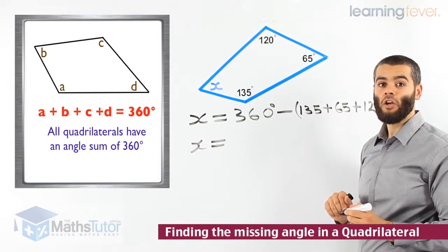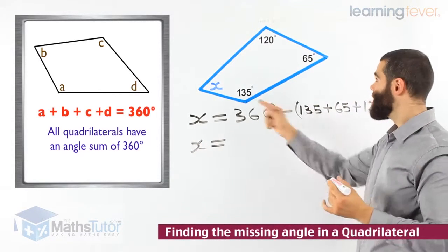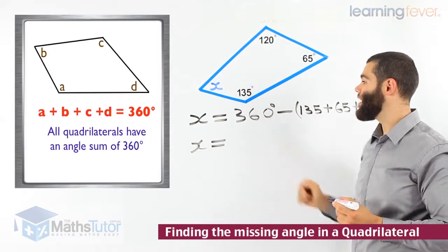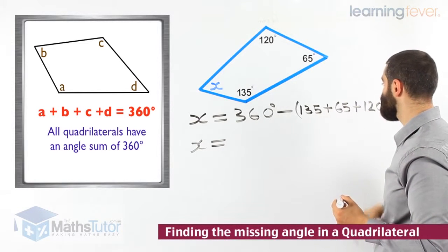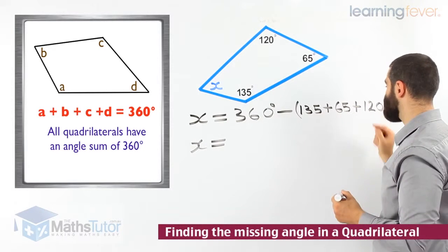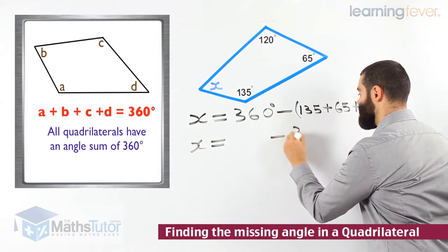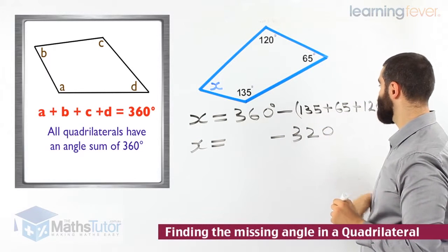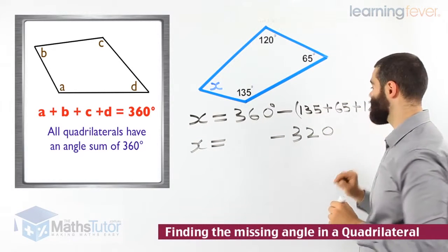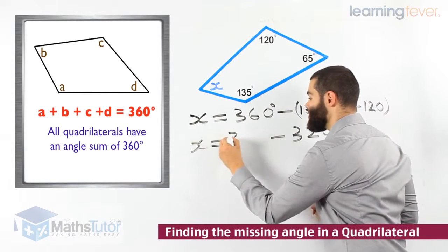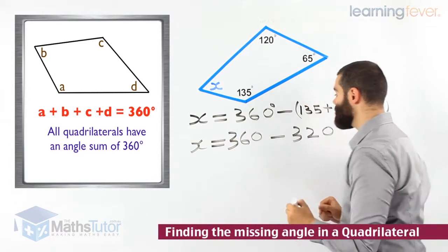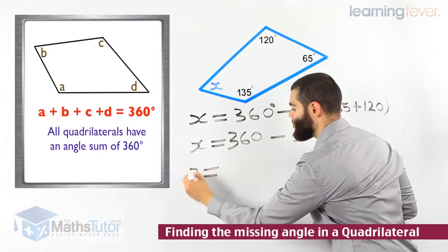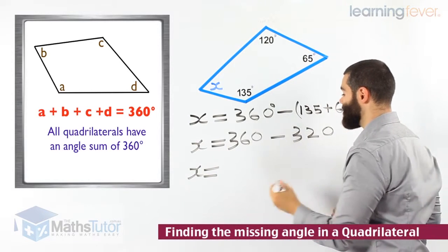X is going to be whatever is left over. 360 is the total — take away that, take away that, and take away that. 135 plus 65 plus 120 equals 320 degrees. Add them up in your calculator if you like: 135 plus 65 plus 120 is 320. So 360 is the total, take away the other three which is 320 degrees altogether.